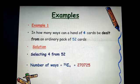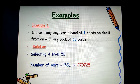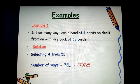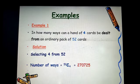Let's look at some examples. In how many ways can a hand of 4 cards be dealt from an ordered pack of 52 cards? Here, we are selecting 4 cards from 52. That gives us 52 combination 4. That is 270,725.